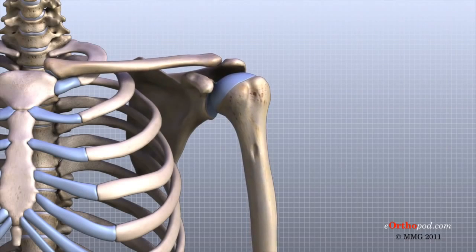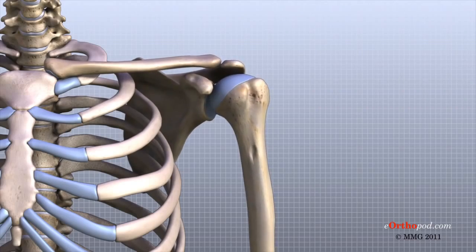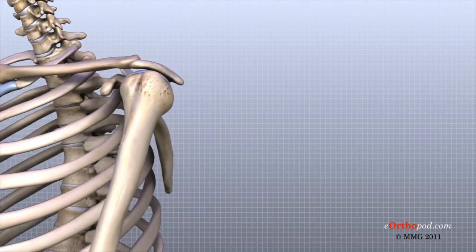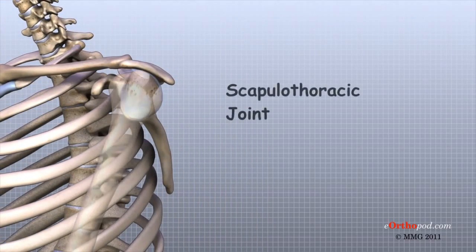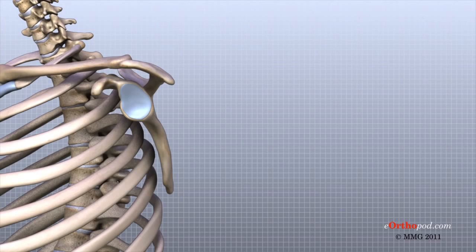A false joint is formed where the shoulder blade glides against the rib cage. This joint, called the scapulothoracic joint, is important because it requires that the muscles surrounding the shoulder blade work together to keep the socket properly aligned during shoulder movement.